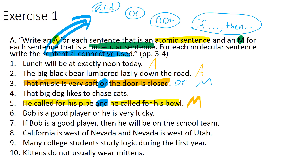Number seven: 'If Bob is a good player, then he will be on the school team.' The IF-THEN sentential connective is a dead giveaway — we have a conditional, so it's a molecular sentence. Embedded within are two atomic sentences: 'Bob is a good player' and 'he will be on the school team.' Number ten: 'Kittens do not usually wear mittens.' We have the NOT sentential connective — a dead giveaway. Embedded within that molecular sentence is a single atomic sentence: 'kittens do usually wear mittens.' So we have a denial of that single atomic sentence.